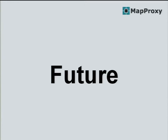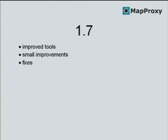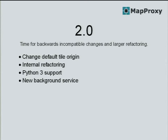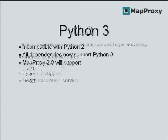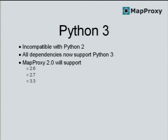That covers the present and use cases. Now I want to give you a quick look into the future. Version 1.6 is out, so we're working on 1.7 without any larger features planned, because we're already making plans for the 2.0 release. We will make some backwards-incompatible changes to refactor some parts, and we will add support for Python 3.